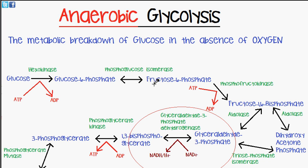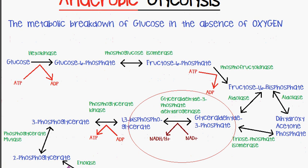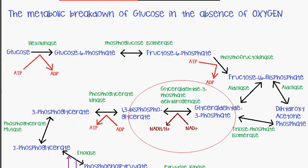In the last video we discussed the normal stage of aerobic glycolysis, and in this video I just want to talk about anaerobic glycolysis briefly so you have a good understanding. A definition of anaerobic glycolysis is the metabolic breakdown of glucose in the absence of oxygen. Anaerobic basically means without air, so anaerobic glycolysis is when glucose is broken down without oxygen.